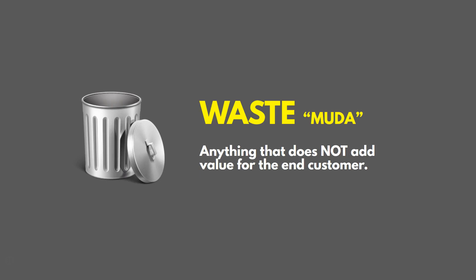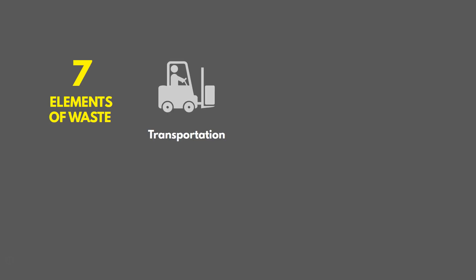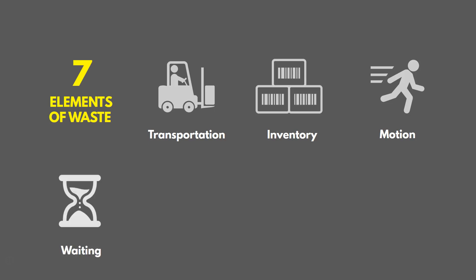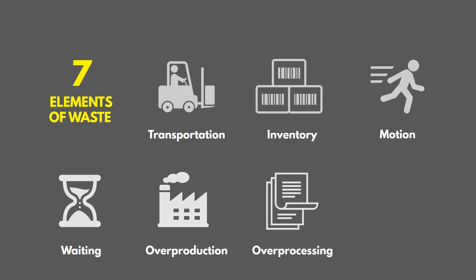In Lean, our goal is to eliminate waste — often called Muda in Lean Six Sigma, the Japanese word for waste. Waste is anything that does not add value for the end customer. There are seven types: transportation (unnecessary movement of materials), inventory (more raw materials than we can immediately use), motion (unnecessary movement of people), waiting (having to wait for a next step), overproduction (producing more than customers demand), overprocessing (doing more than the customer requires), and defects (product issues we have to correct).